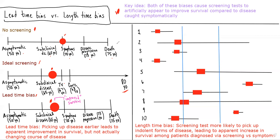And that's the basic idea for the lead time bias — we are picking up disease earlier through screening, and it leads to this apparent improvement in survival, but we're actually not changing the course of disease, and therefore the screening test isn't actually leading to improved survival.